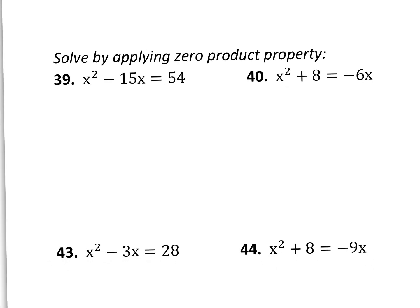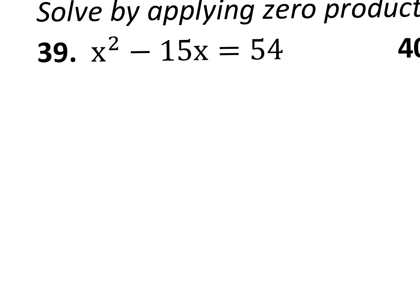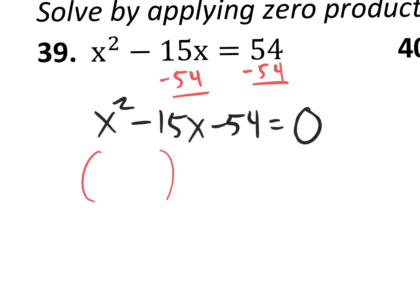And we're also making these videos. So down here, it says solve by applying the zero product property. So obviously, to apply the zero product property, you need the answer to be zero. So number 39, it doesn't say, I mean, not your answer to be zero, but you need the equation to be everything on one side, and on the right side, just have equal to zero.